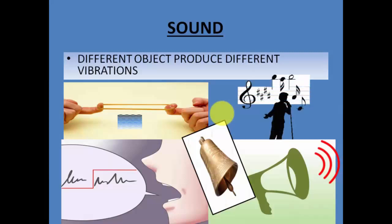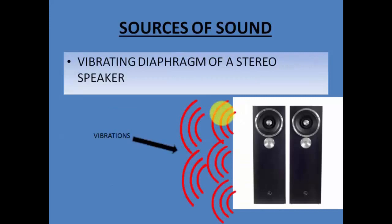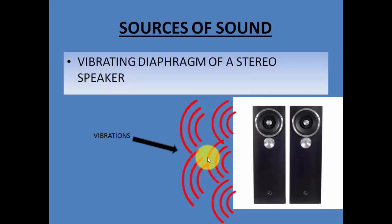Those are a few examples of how different sounds are produced. When vibrations are produced, they reach our ear and we are able to hear the sound. Now let us discuss the sources of sound. There are many sources — for example, the vibrating diaphragm of a stereo speaker produces vibrations, and when the speaker is on, these vibrations reach our ear and that is how we hear those sounds. Anything that produces vibration becomes a source of sound.